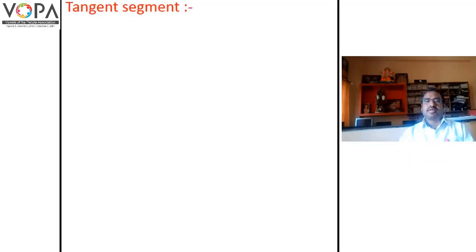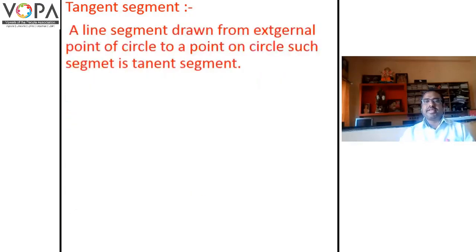First, understand the definition of tangent segment. The definition is: a line segment drawn from external point of a circle to a point on a circle. Such segment is called tangent segment.